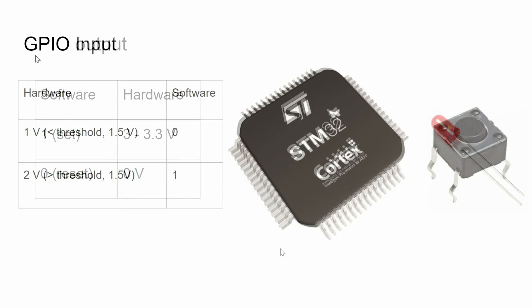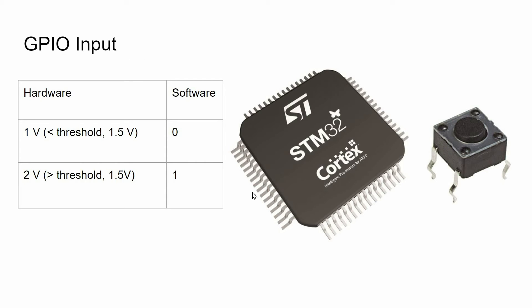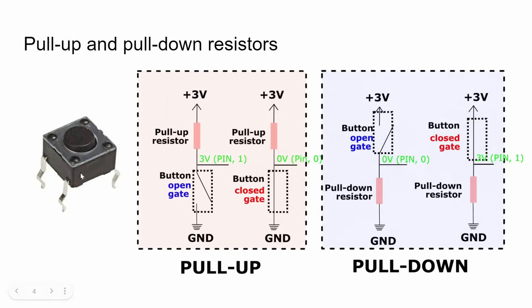We also have GPIO input mode. Instead of controlling the state of the pins, we can read the voltage level of the pins. When the voltage level is less than some threshold, which is around 1.5 volts, we get state zero; when the voltage level is greater than the threshold, we get state one. A simple example of GPIO input mode is a button. We can read the state of the button, but a button is just a mechanical structure that connects or disconnects wires — it cannot produce voltage, so we need a power supply and some resistors.